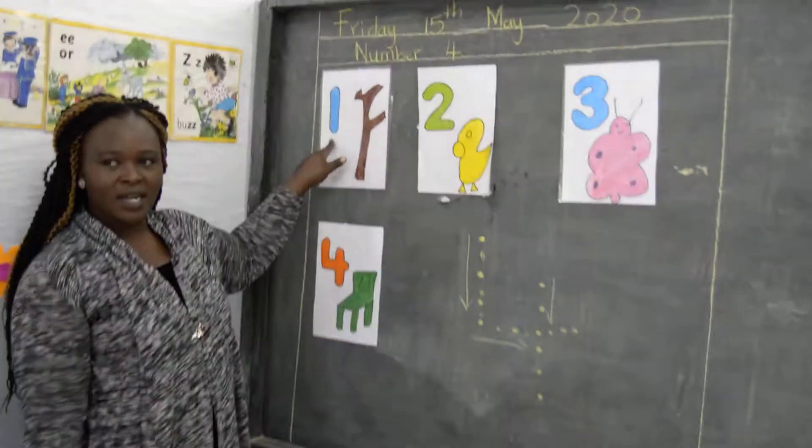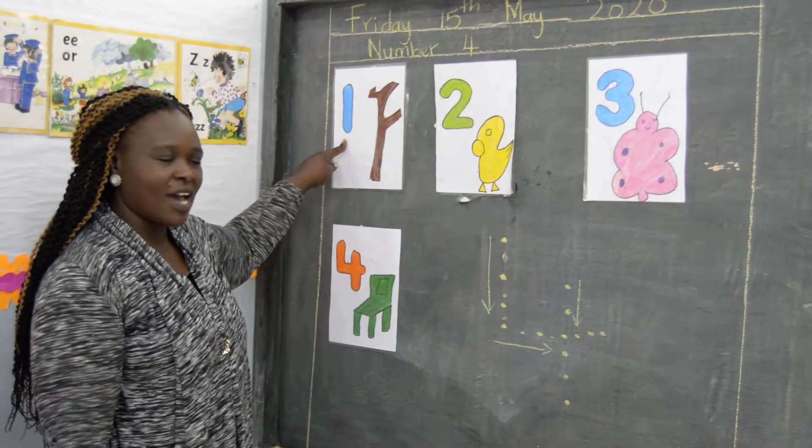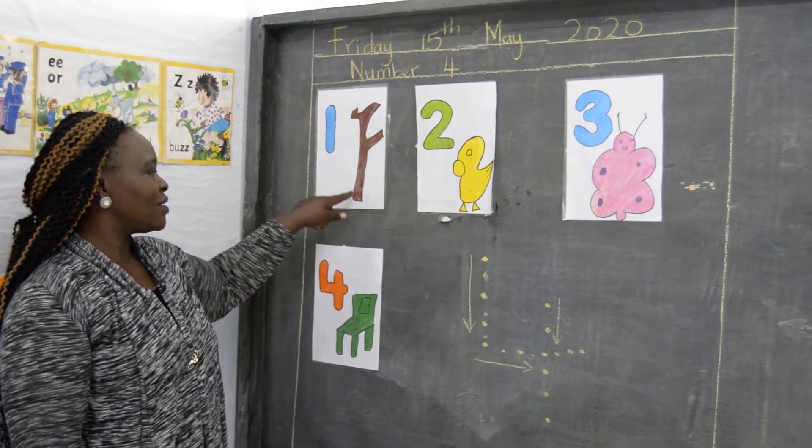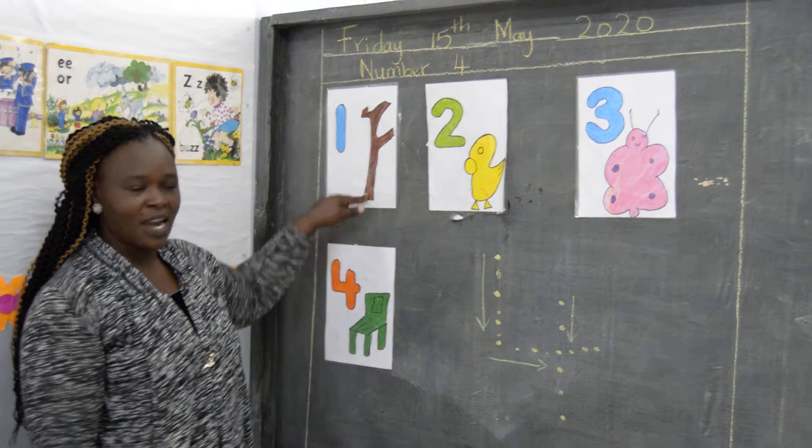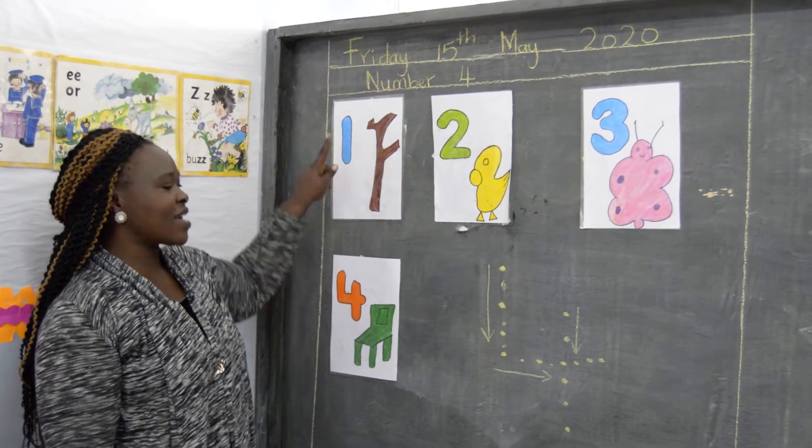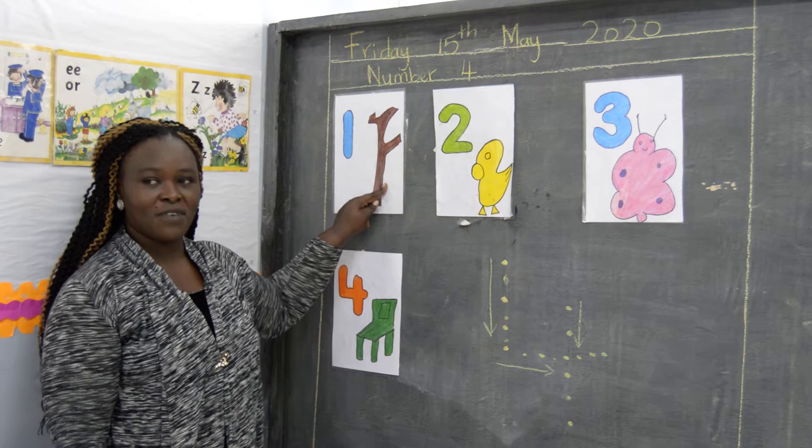The first one, we are going to read together. One like a stick. Children, one like a stick. Very good.